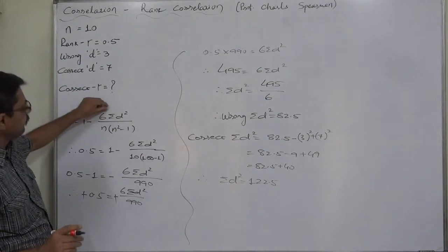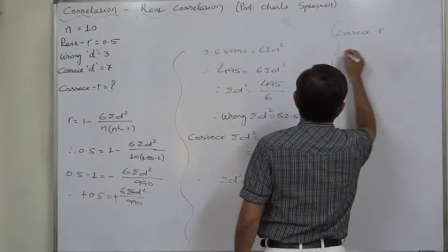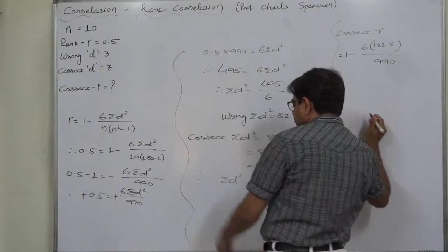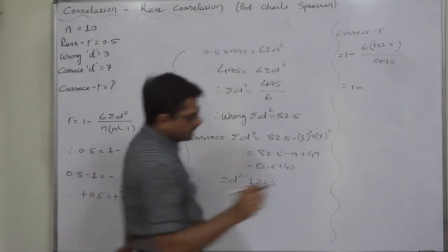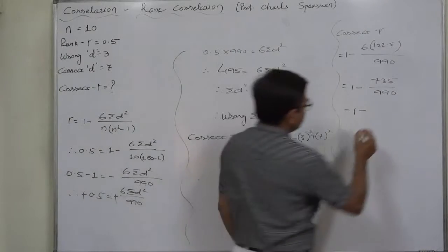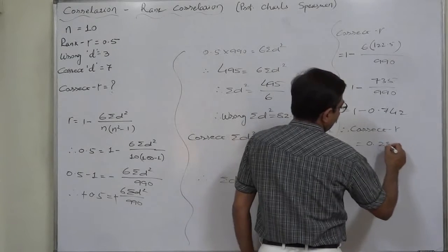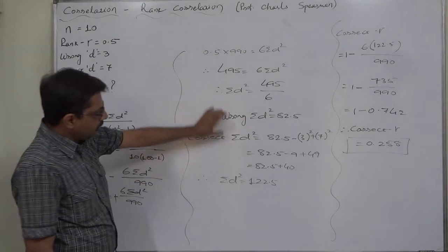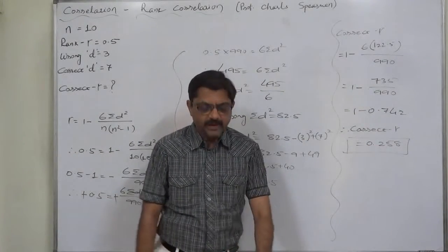We now substitute this correct sigma d² into the formula. The correct coefficient of correlation = 1 − 6×122.5 / 990 = 1 − 735/990. So the correct value of the coefficient of rank correlation comes to 0.258. This was the case of reverse calculation — finding the wrong sigma d², then correcting it to find the correct coefficient of rank correlation. Thank you very much.